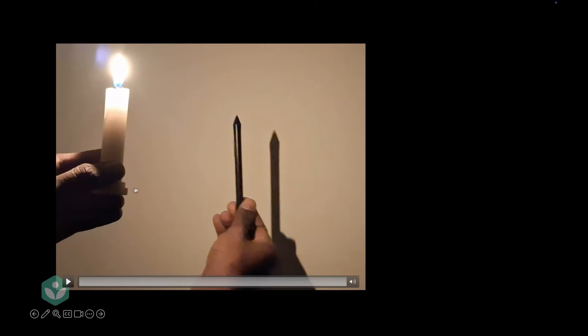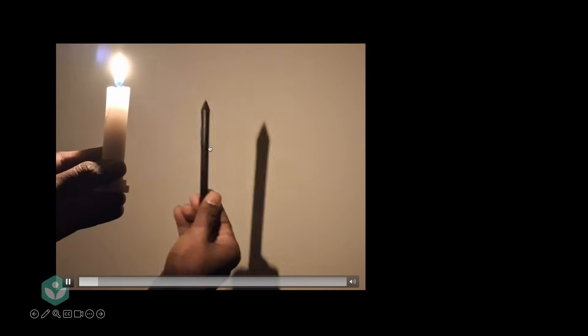Let's see this in action. Let's say this is our light source, and this is our object, and this wall acts as the screen. As we move the object closer to the light source, you'd see that the shadow is getting enlarged. I'll do it again. As we move the object close to the light source, the shadow becomes larger.